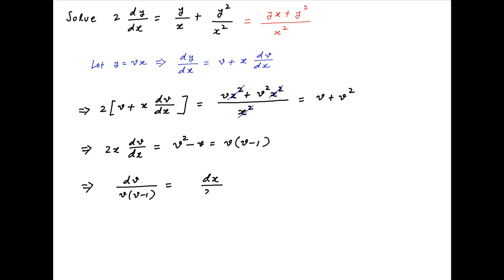Take the integral of both sides, adding the constant of integration on the right-hand side. Let's assume that is ln c. On the left-hand side, the integrand can be written as 1/(v-1) - 1/v.